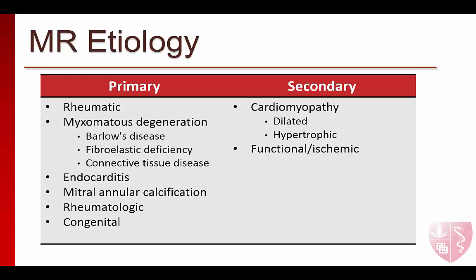Now let's explore the causes of secondary MR in a bit more detail. The pathophysiology of MR from a dilated cardiomyopathy was described earlier. In hypertrophic cardiomyopathy, thickened myocardium can cause systolic anterior motion, or SAM, of the anterior mitral leaflet, leading to both mitral regurgitation and left ventricular outflow tract obstruction. This pathophysiologic state is exacerbated by tachycardia and hypovolemia. SAM will be discussed in further detail in the hypotensive emergency section.